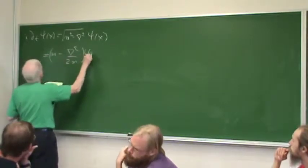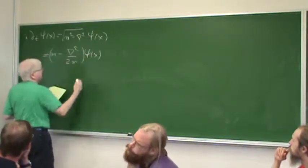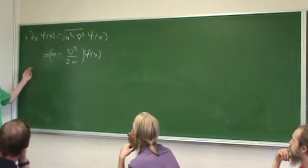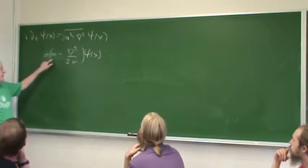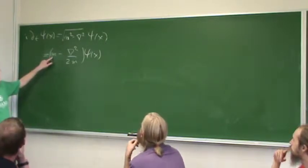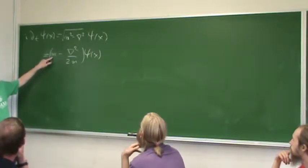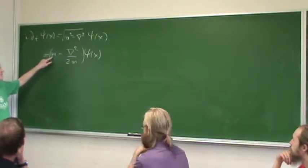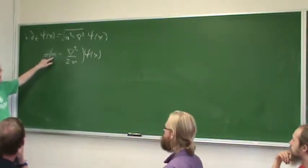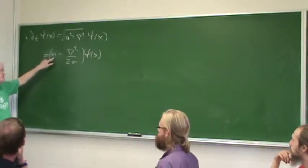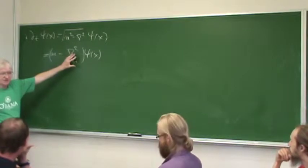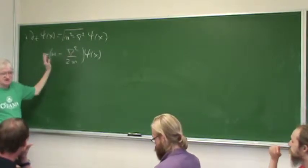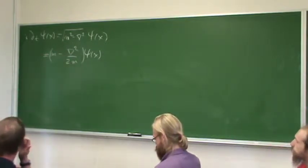We approximate: since m² is large, sqrt(m² − ∇²) ≈ m − ∇²/(2m). You recognize this as Schrödinger's equation with a better formula for energy — the real formula is mc² plus the kinetic term.